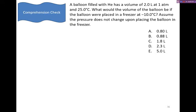Okay, let's try another one. Pause the video now. Try this on your own to see if you can get it. Welcome back. So in this question, we have a balloon that's filled with helium at 2 liters and 1 atmosphere and 25 degrees Celsius. What's the volume of the balloon if it were placed in a freezer at negative 10 degrees Celsius? Assume that the pressure does not change upon placing the balloon in the freezer. Again, we're looking here at the ideal gas law. Helium is small enough, the temperature is high enough, even though it's at room temperature, that it's going to behave ideally.